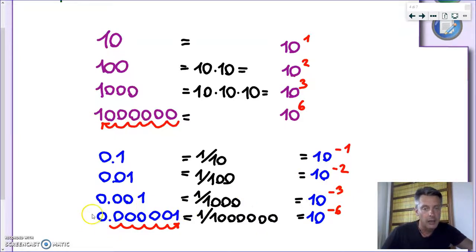0.00, there were 5 zeros here, it's 1 millionth, because I'm moving this decimal point from here to here, 6 places of 10 to the power of minus 6.